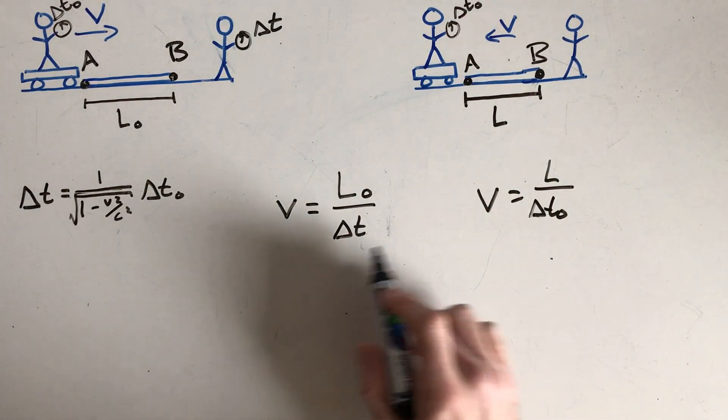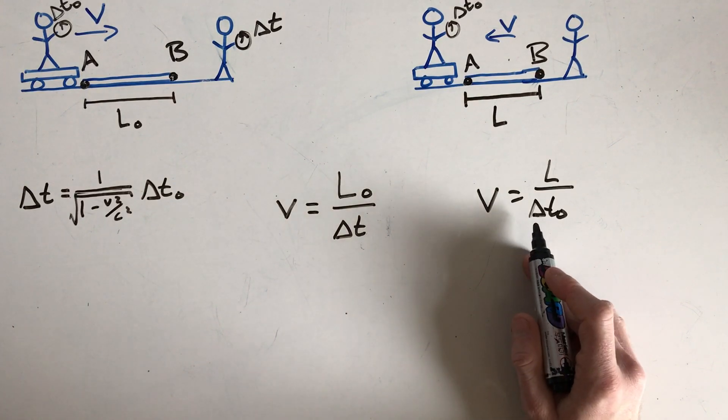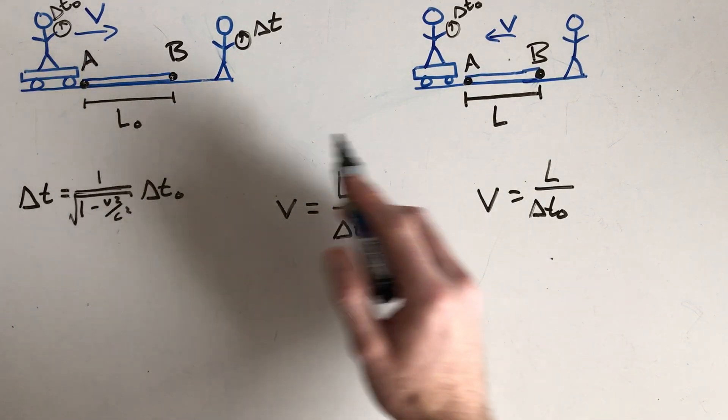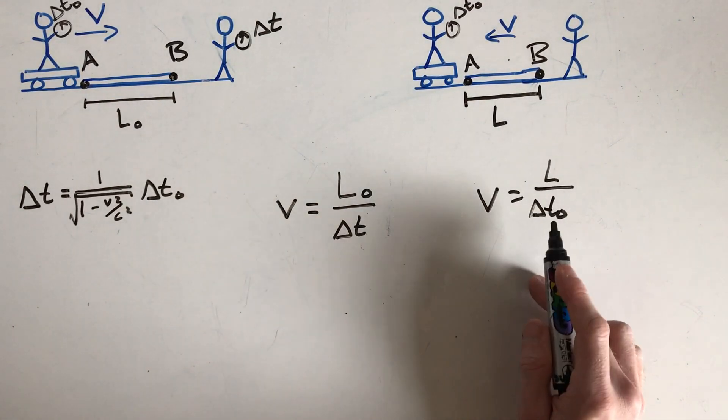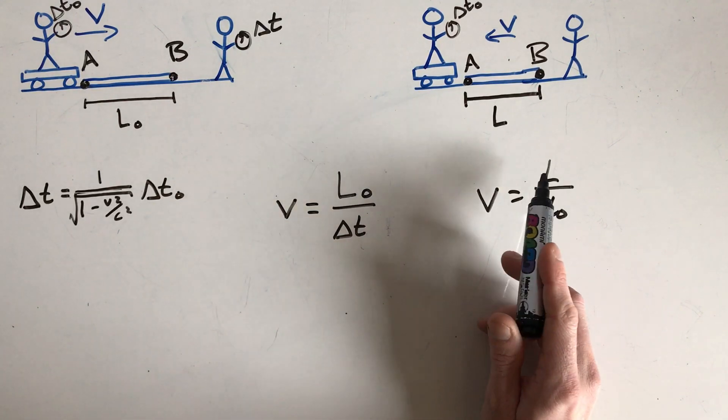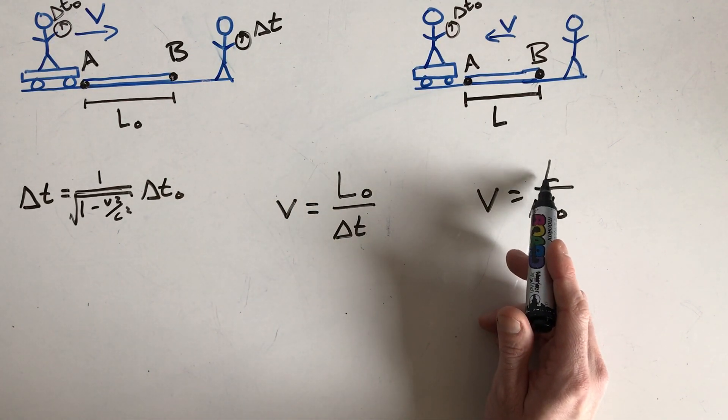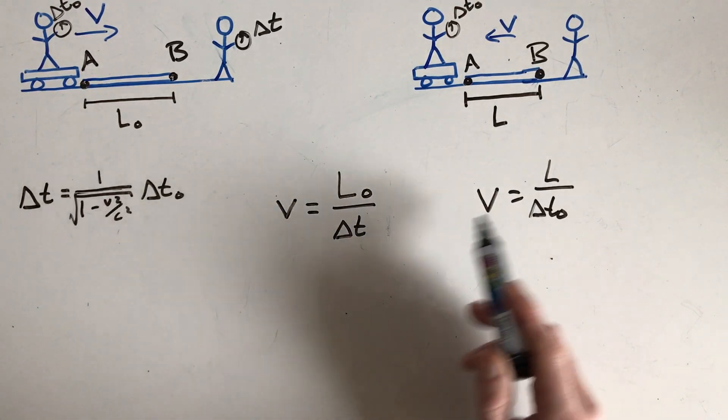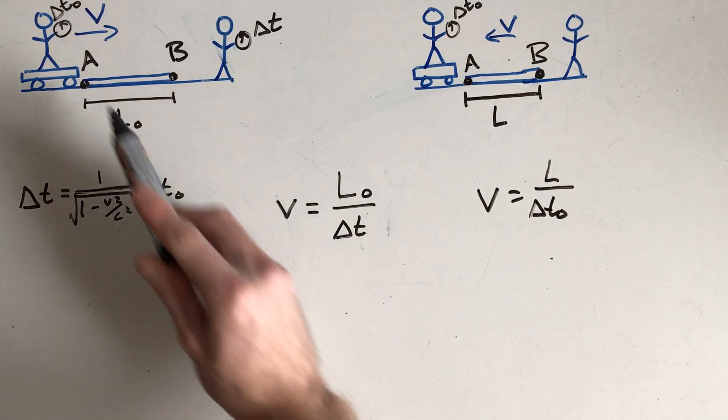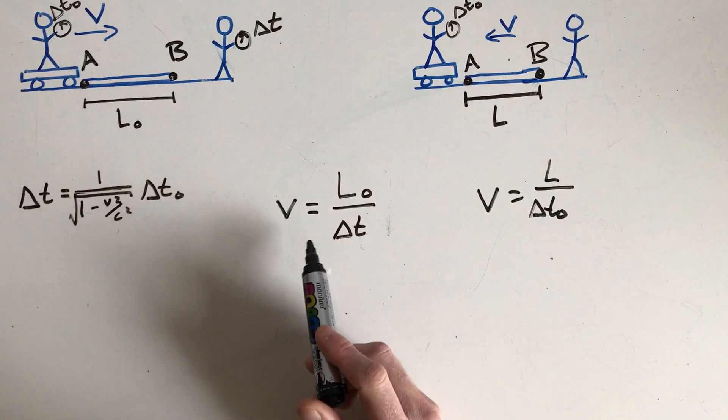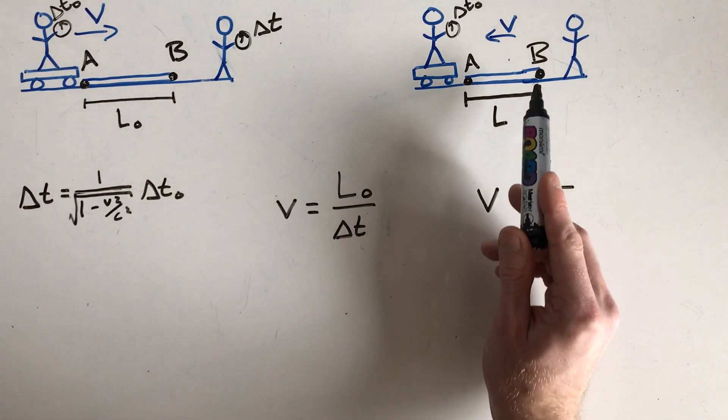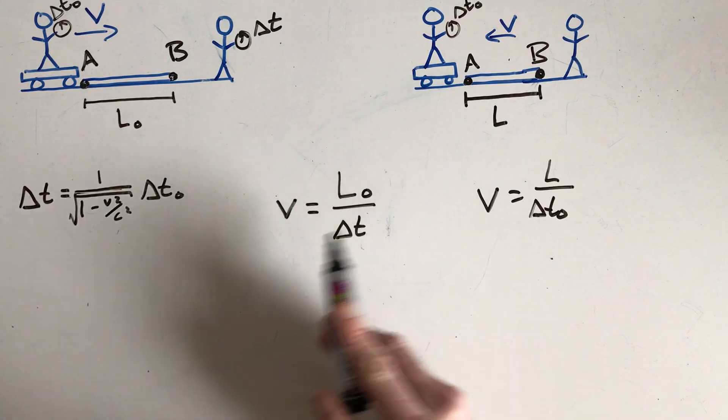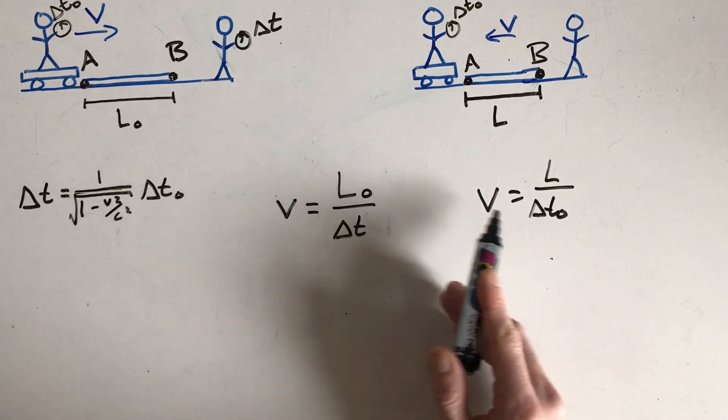So what this means is they both measure different times that it takes the skateboarder to pass the rod, which means they also both have to measure that the lengths of the rod are different because these speeds are the same. Here, this is the speed of the skateboarder passing the rod. This is the speed of the rod passing the skateboarder, but they should be the same, same magnitude.